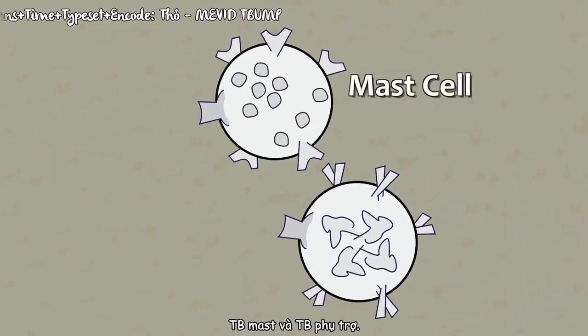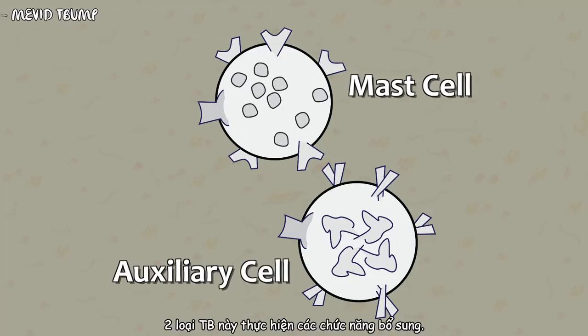Mast and auxiliary cells. These two types of white cells have some complementary functions.